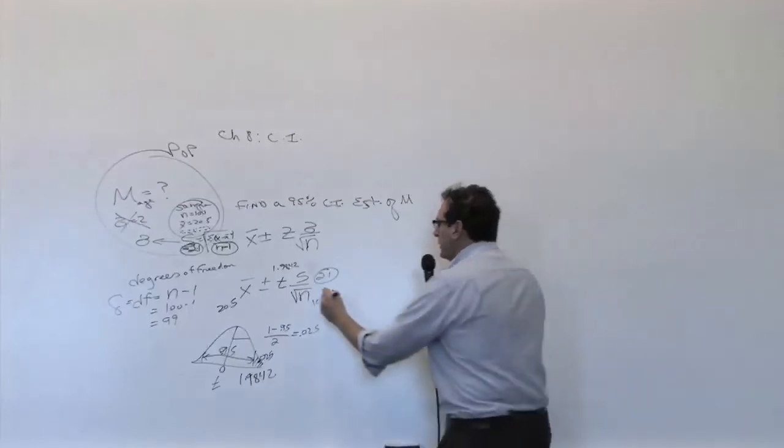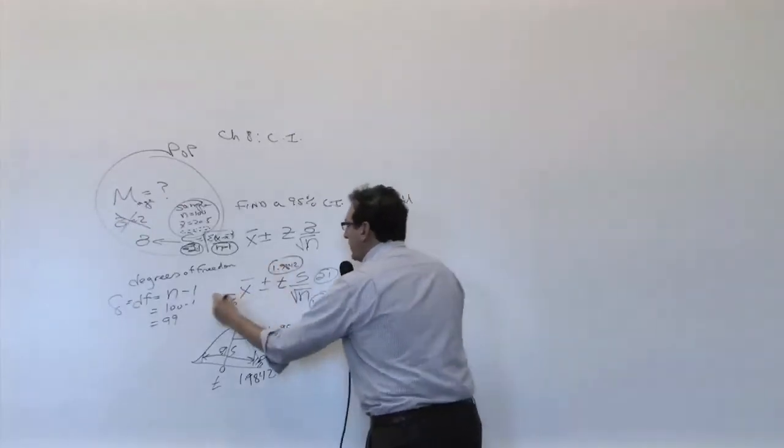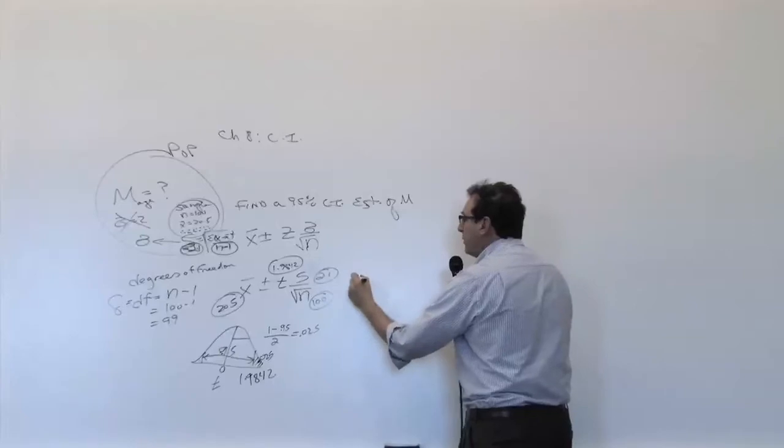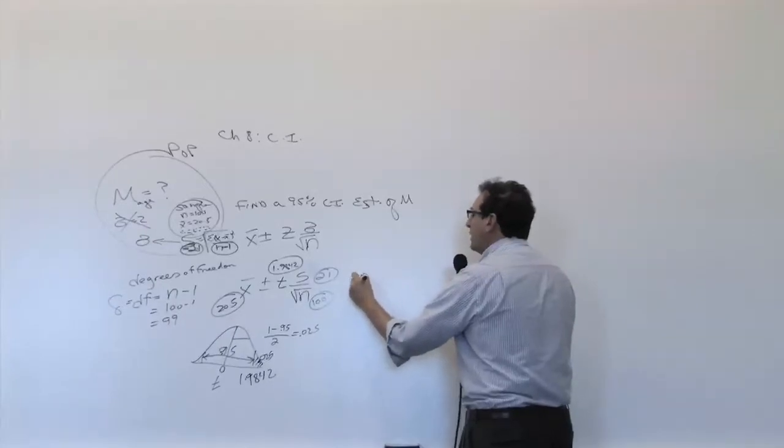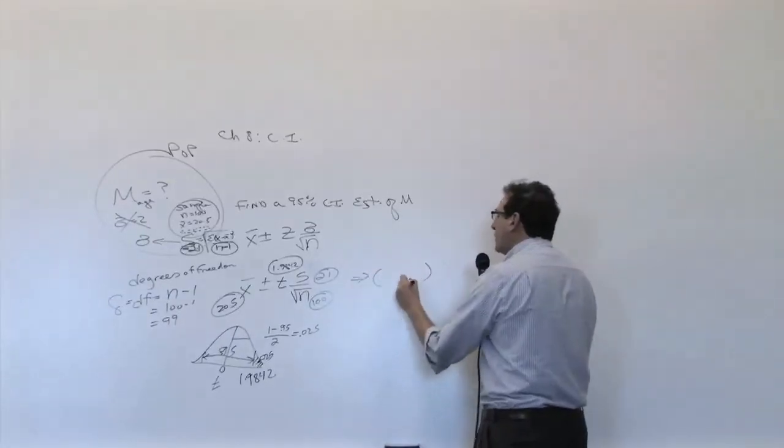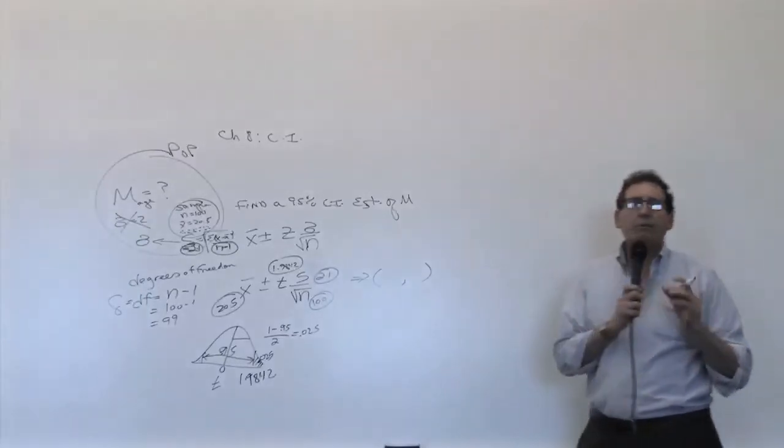So plug in these four numbers into your calculator and tell me what you get. And the answer, of course, should be very similar. This leads to an interval that should be similar to before, but a little bit bigger.